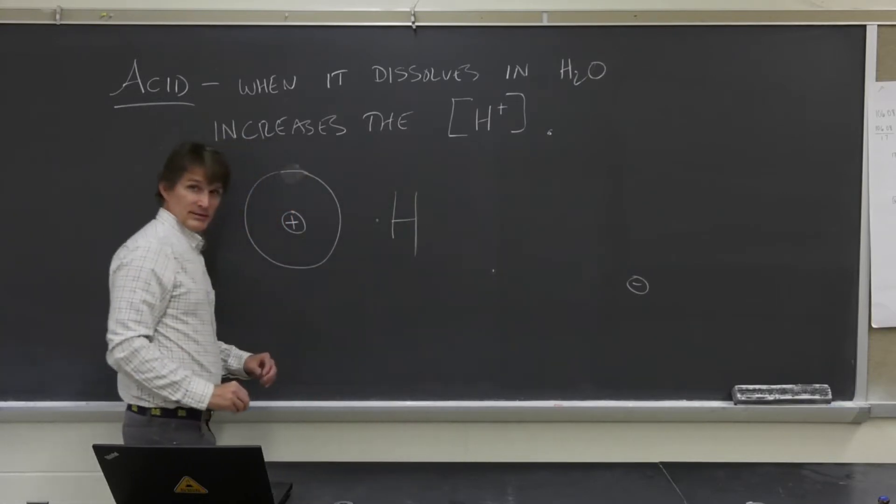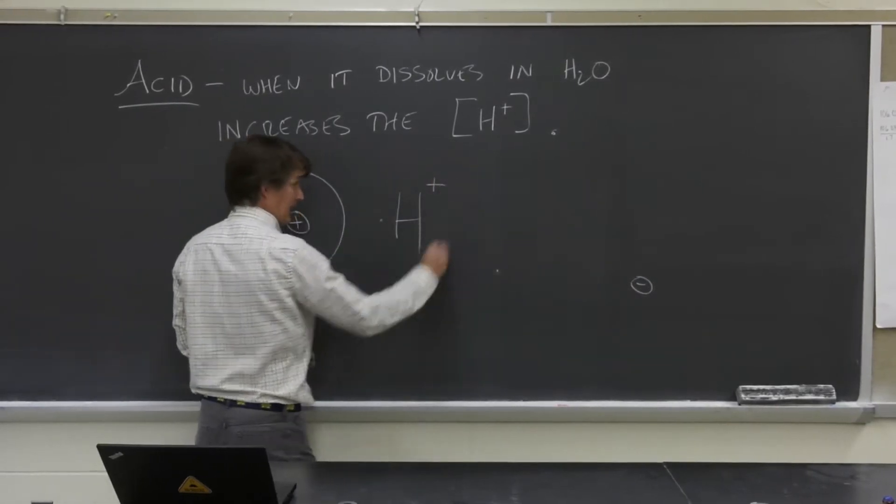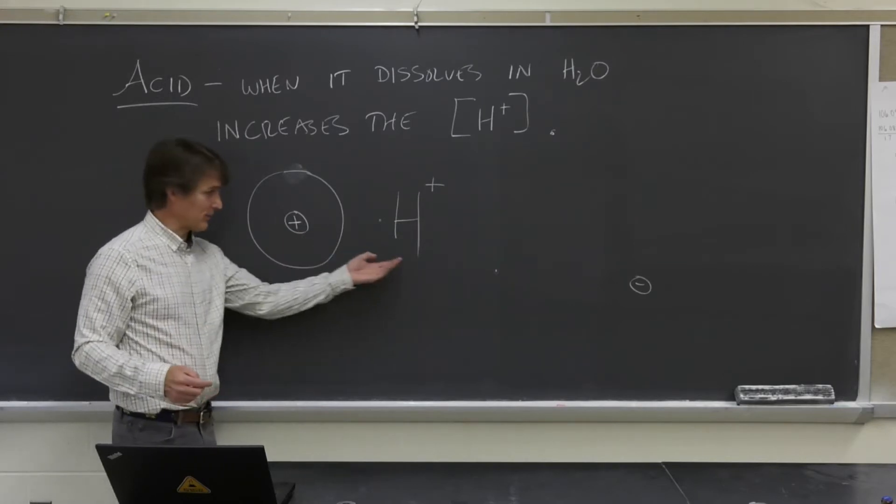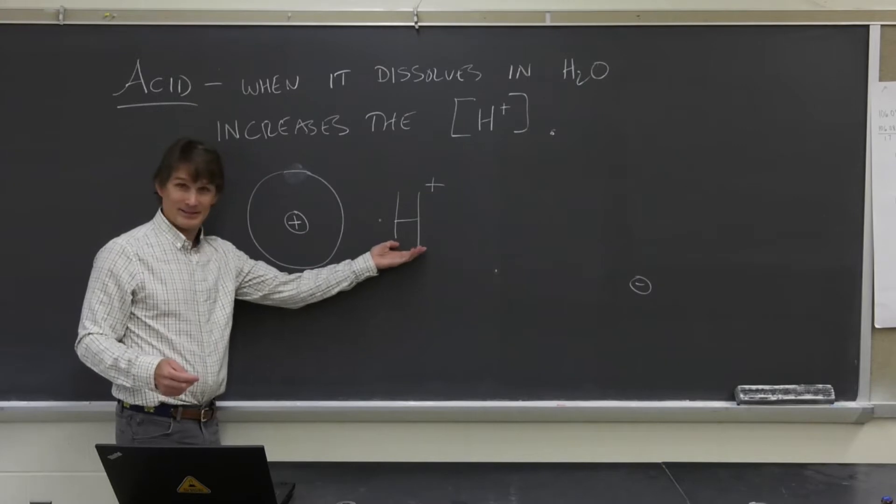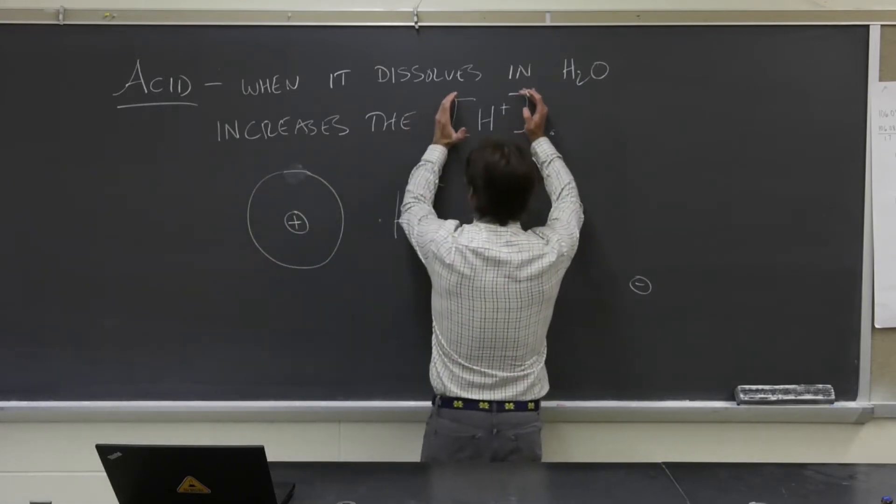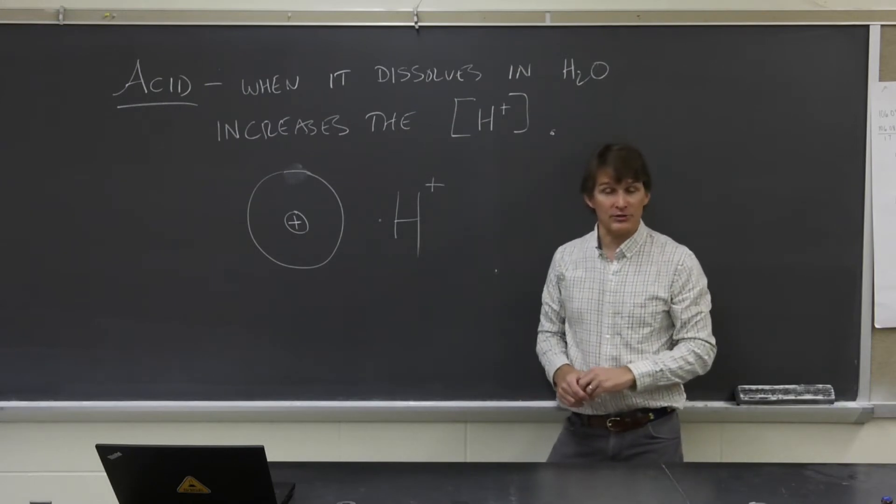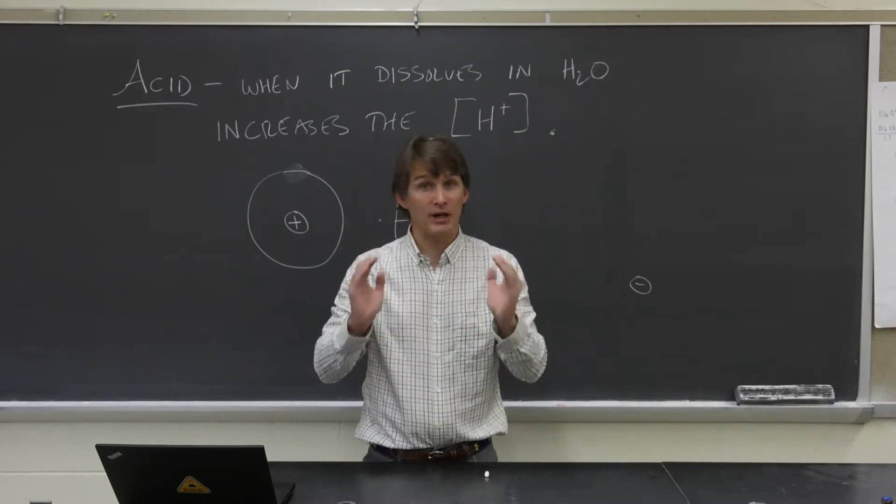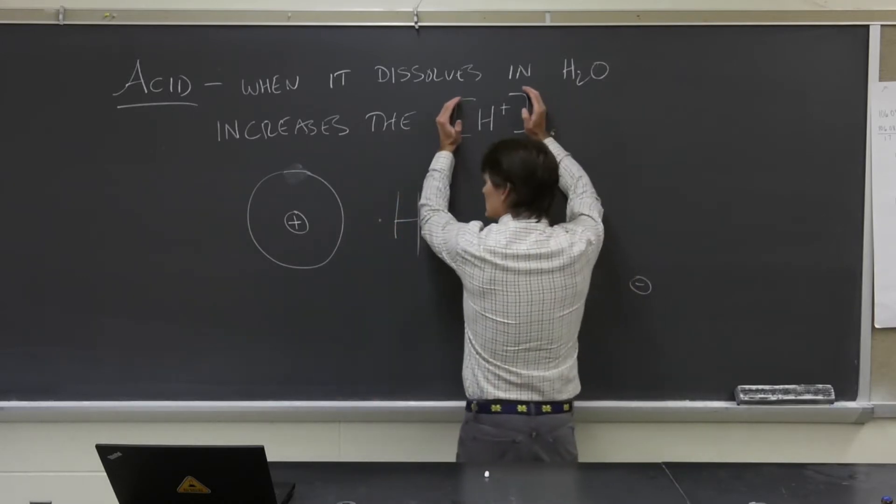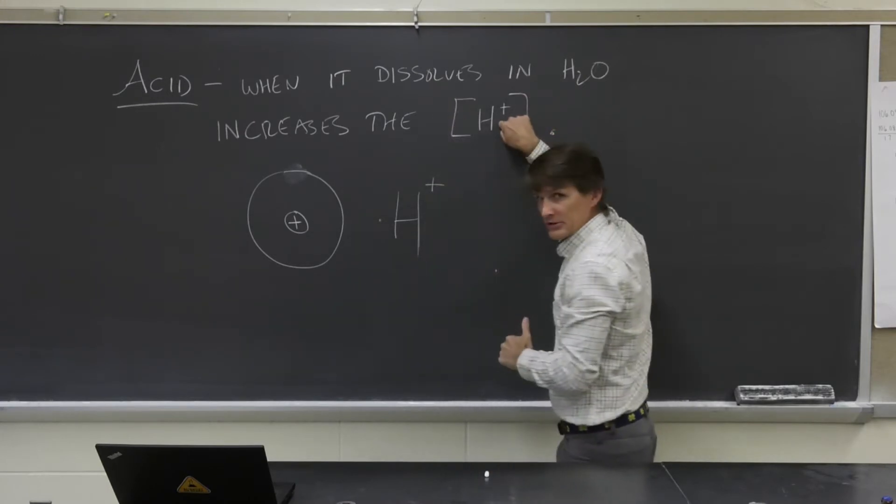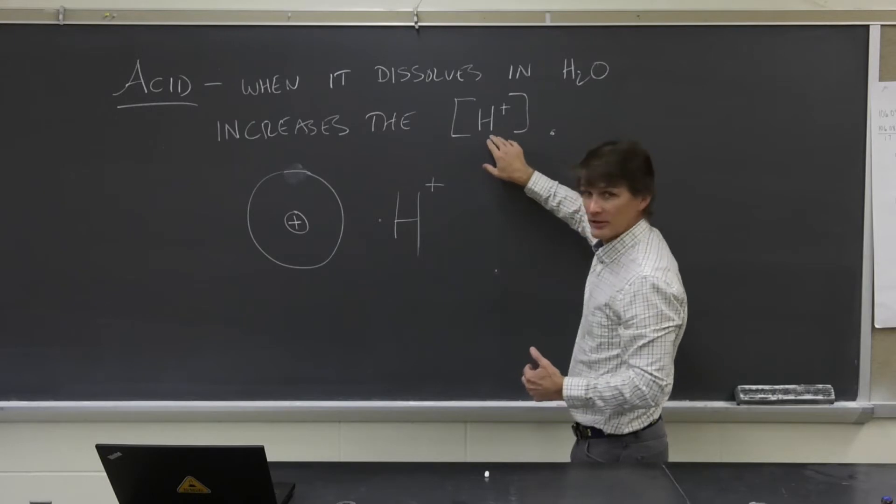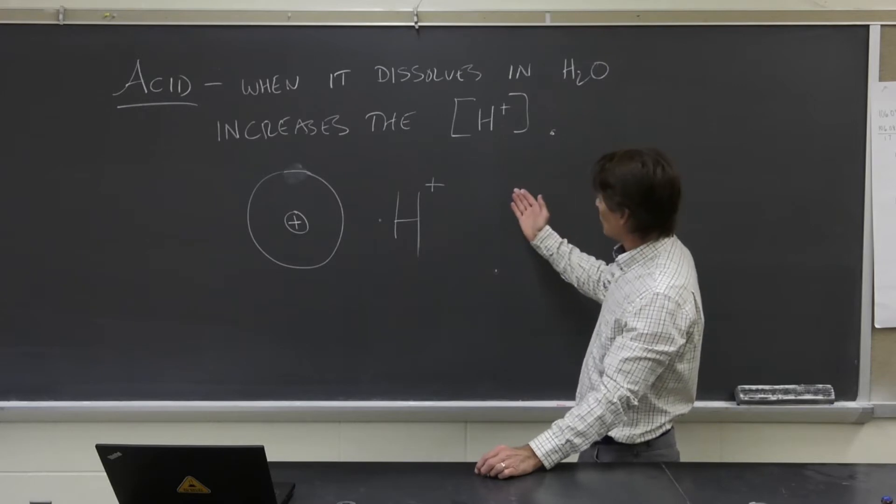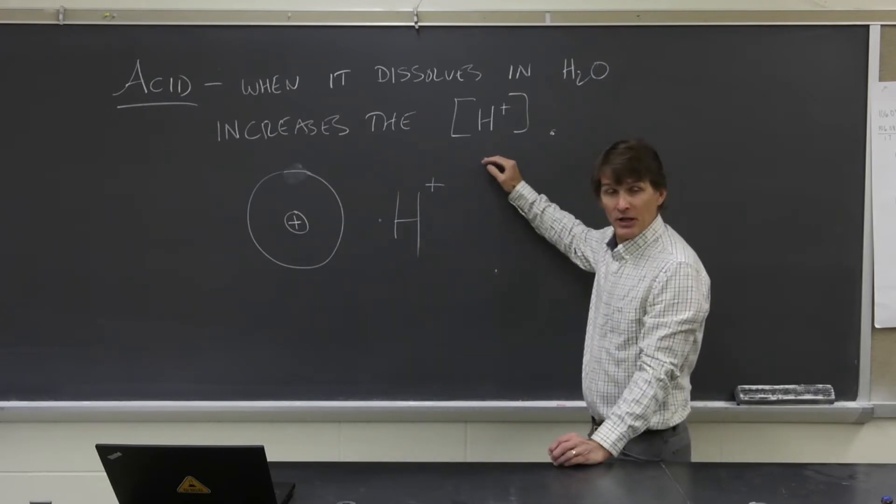So we write the hydrogen atom like this, and if it's got a positive charge, we write it like that. So I can say proton and mean the proton itself, or I can say proton and write it like this. You'll also note that I wrote the H plus in brackets, and that's a shorthand notation we use in chemistry. Anytime you see something written in brackets, it means the concentration of whatever's inside the bracket. So an acid is a substance that when it dissolves in water, it will increase the concentrations of protons.